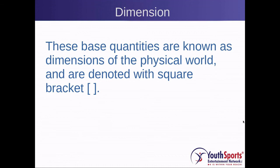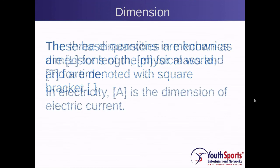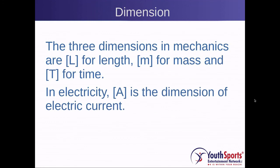The base quantities are known as dimensions of the physical world and they are denoted with a square bracket. The most common ones are length, mass, and time. Length is denoted by the letter L, M is used for mass, and T is used for time.